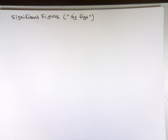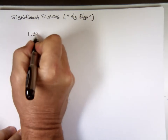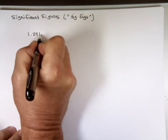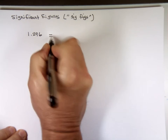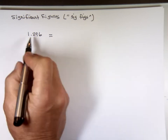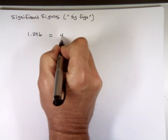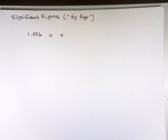Significant figures. So if I write this number, 1.296, how many significant digits are there? Four significant digits.